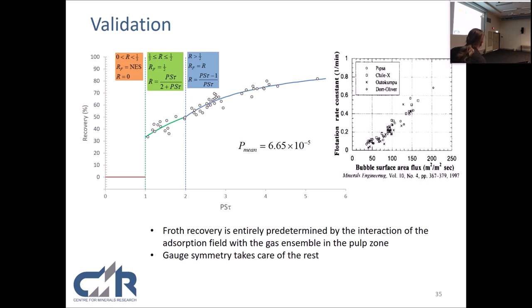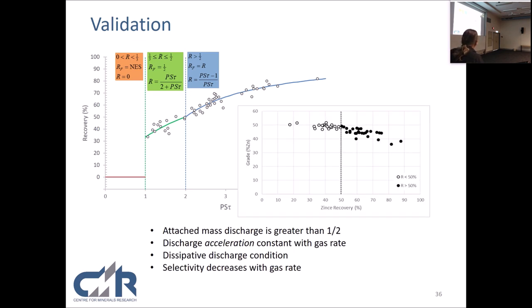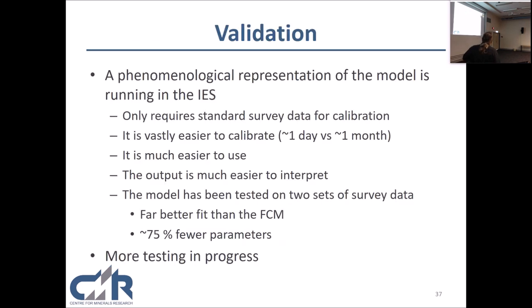Because this is a three cubic meter cell with a variety of impellers, this big kink in the middle, I think that's rather good. I'm rather pleased with that. So froth recovery is entirely predetermined by the interaction of the adsorption field and the gas ensemble of the pulp zone, and gauge symmetry takes care of the rest. I said that the selectivity would decline, and I just put up the grade for the same data. You can see up to 50%, it's almost flat, and then, wow. Dissipative discharge, much less efficient, much more water, much lower grade.